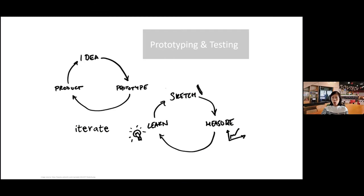The last part is about prototyping and testing. This is where we talk about convergence and divergence. When we diverge, we look at all the possible solutions; then we converge to prototype. When we prototype, it is to make things tangible — to actually see something quickly before we decide to continue with it.